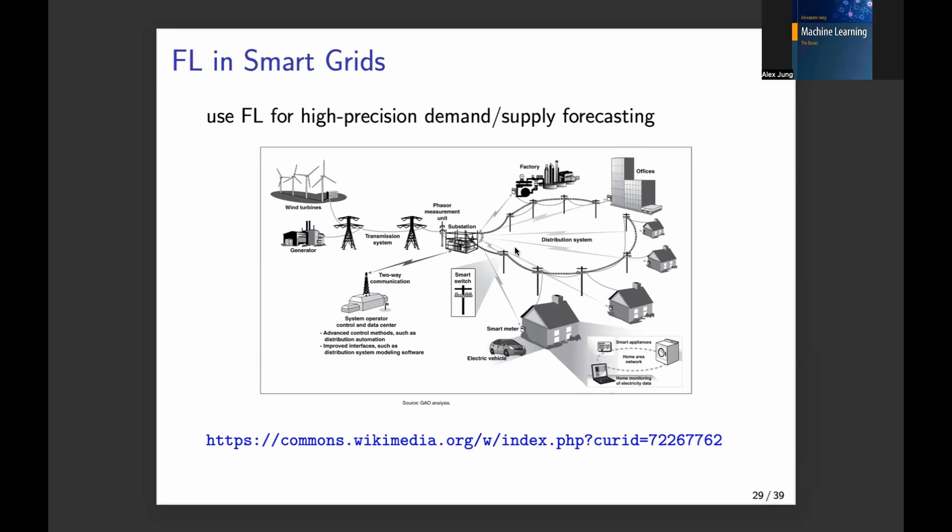And I have to take more costly energy from the conventional power grid to serve my washing machine. For this, I would like a federated learning app that delivers the perfect prediction for my area, for my house — how likely is there sunshine in the next two hours. This is something that federated learning might be able to do.